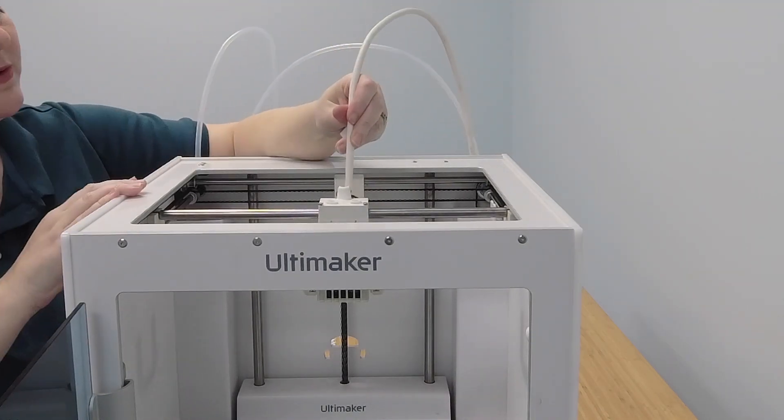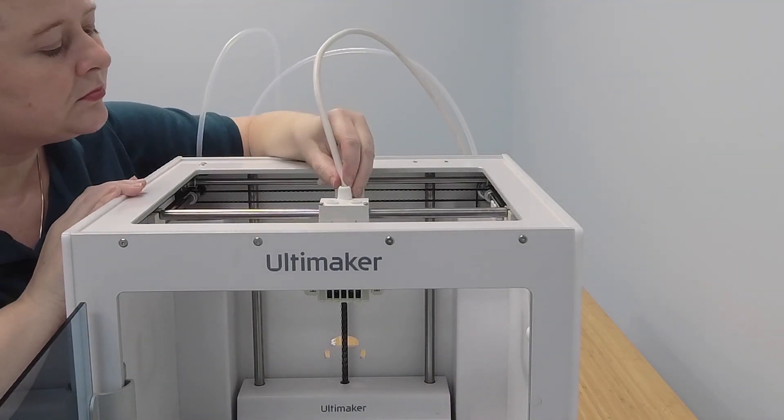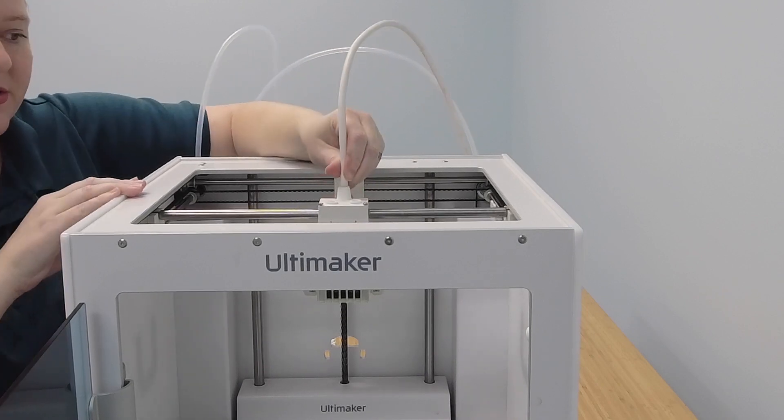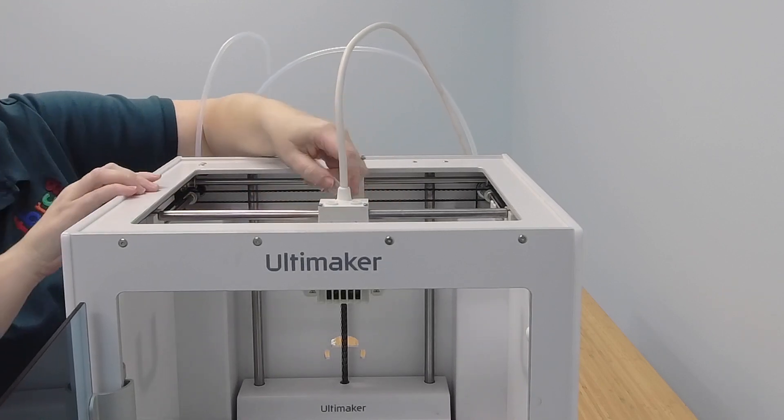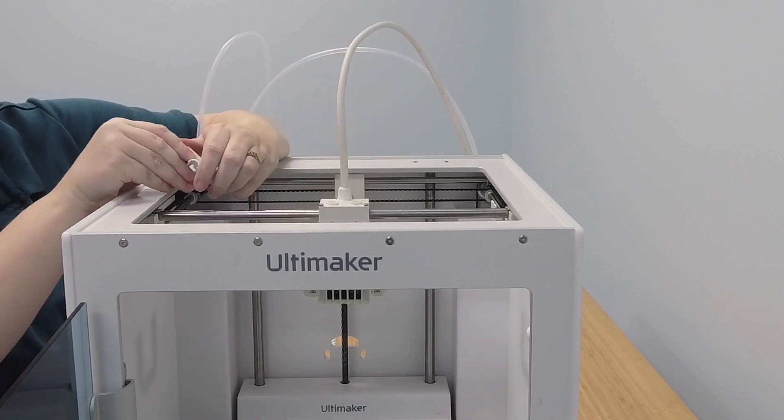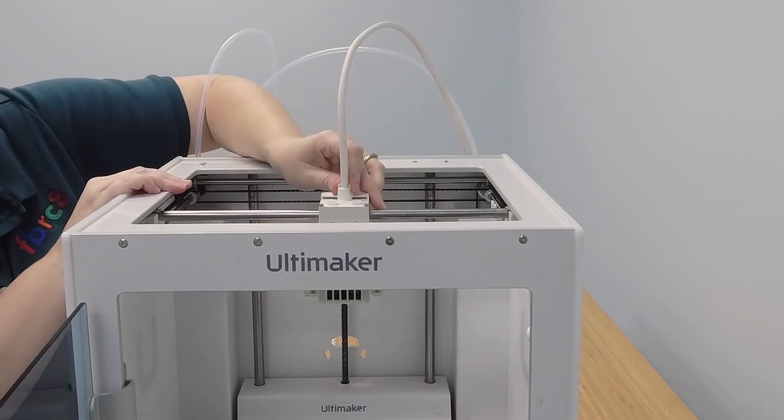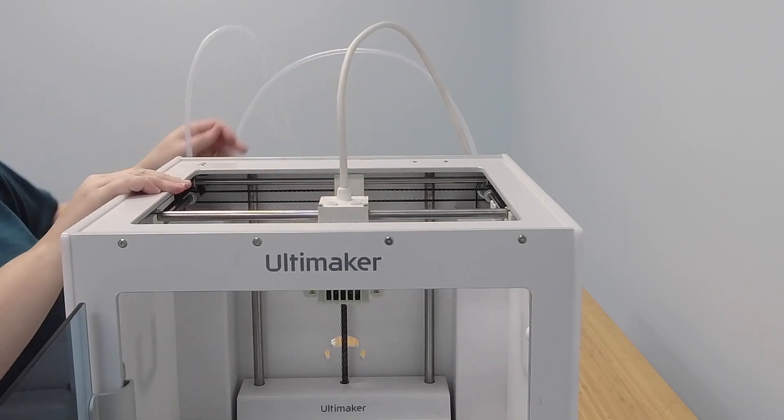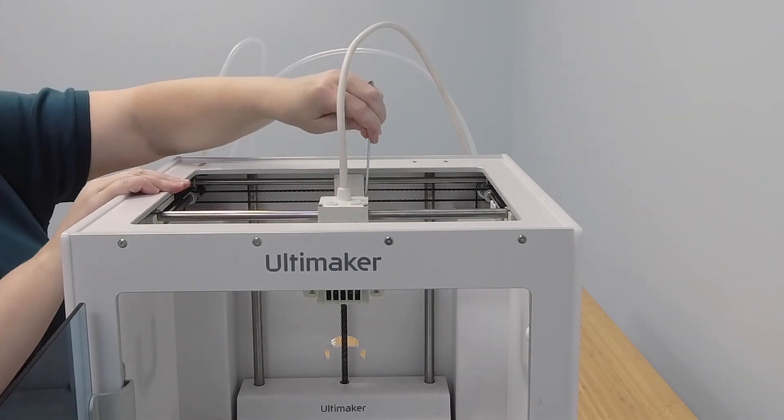Now we'll go ahead and reseat the printhead cable. Make sure that the cable connector clicks into the right position in the back and take your printhead cover. Oops, looks like mine's upside down. Let's try again. All right, that should slide right back into place. Now we can reinstall the screws.